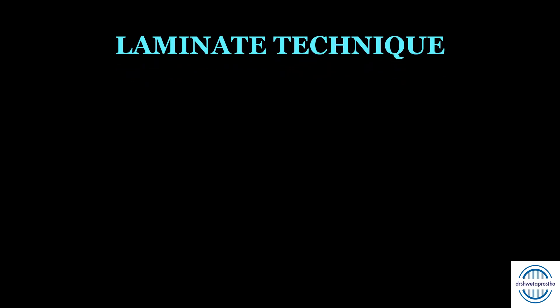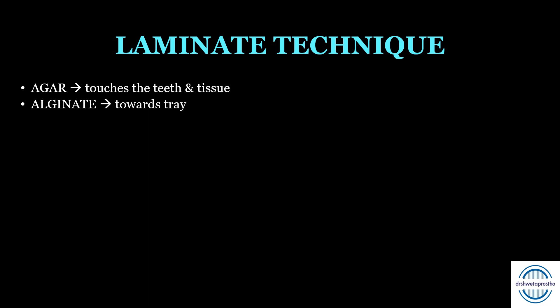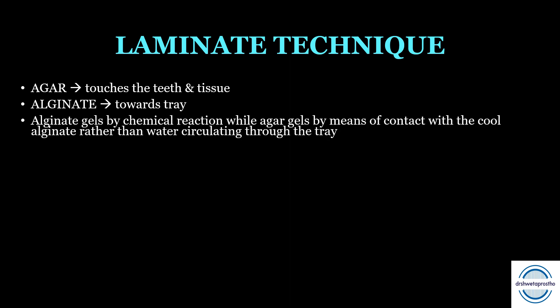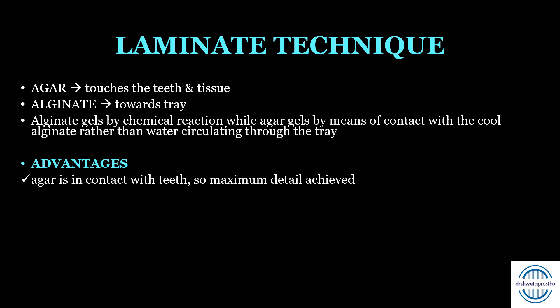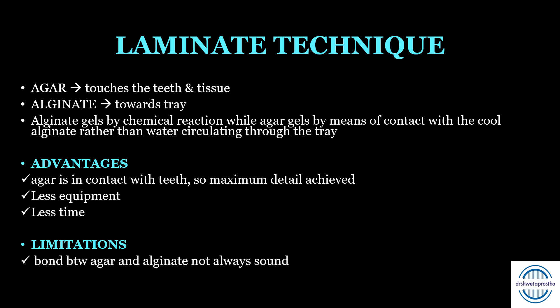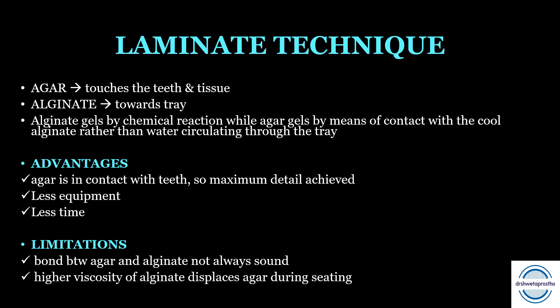The laminate technique is an agar-alginate combination technique often asked in theory and viva exams. The principle: syringe agar is injected on the area to be recorded to contact the teeth and tissues, while the impression tray is loaded with chilled alginate. The alginate gels by chemical reaction towards the tray side, while the agar gels by contact with the cool alginate rather than a water-circulating tray. Advantages: maximum detail as agar contacts the teeth, less equipment needed, and faster setting. Limitations: the bond between agar and alginate may not always be sound causing separation, and higher viscosity of alginate may displace the agar during seating.